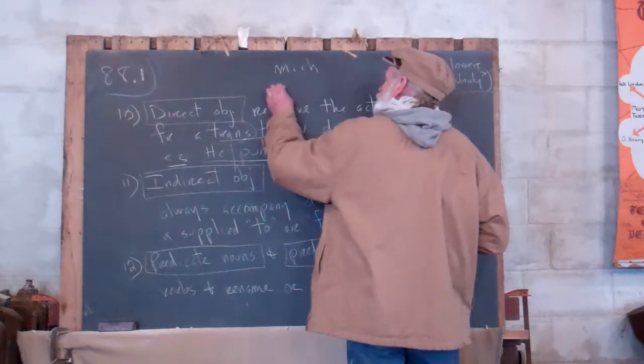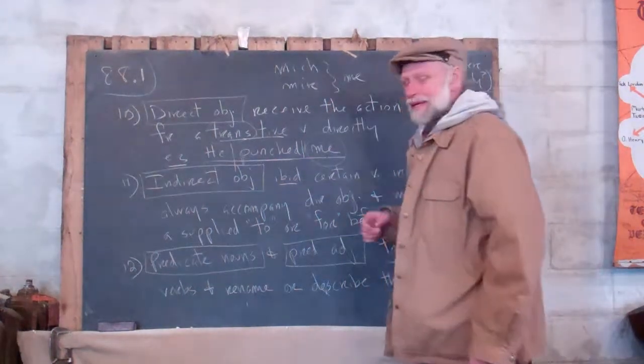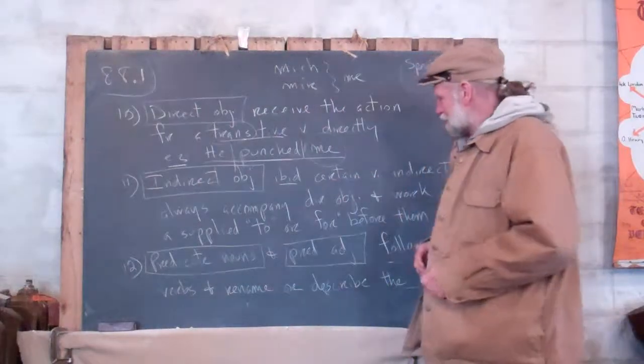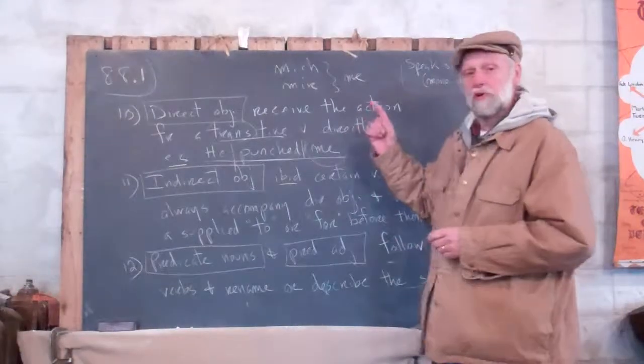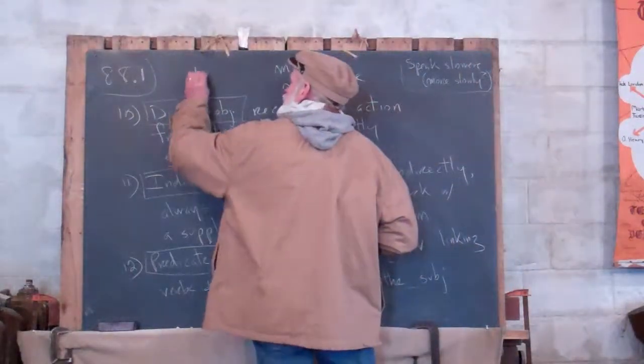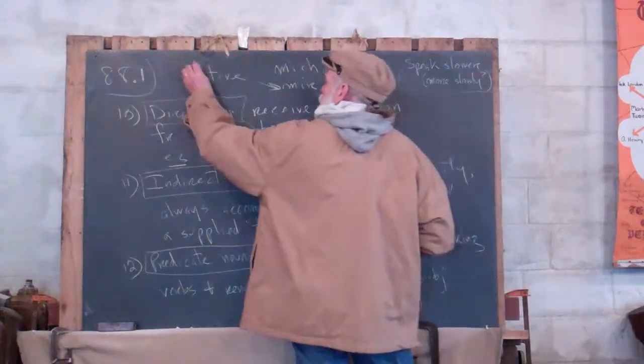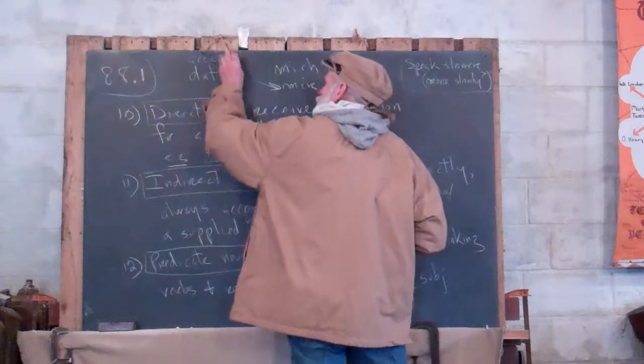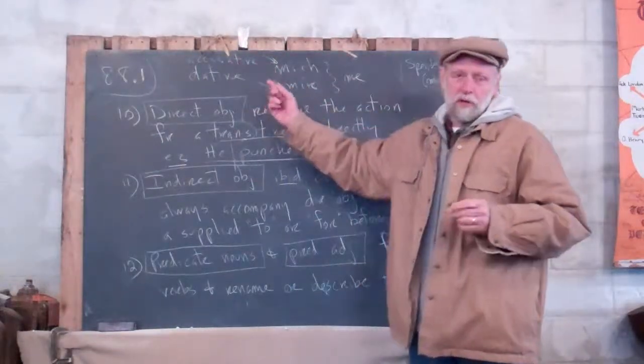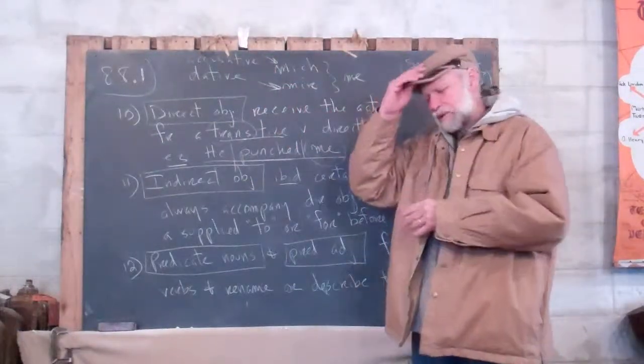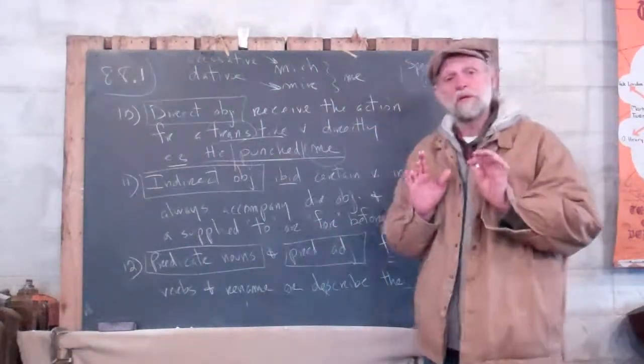So mich and mir both mean 'me' in German, and you have to know the difference to speak German correctly. Other languages do that too. That's called the dative case. This is the accusative case. But sometimes in English, that's called the objective case. Dative does not really occur in English, because we do it with word order.